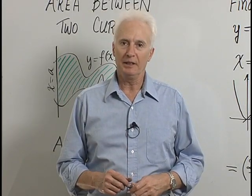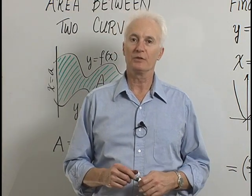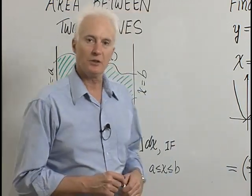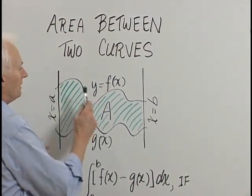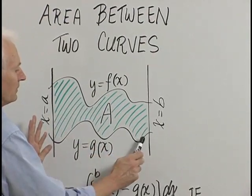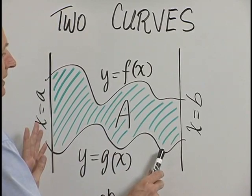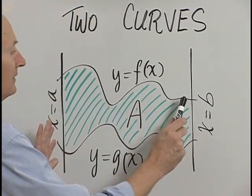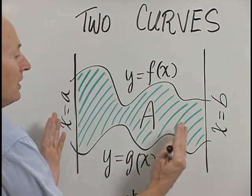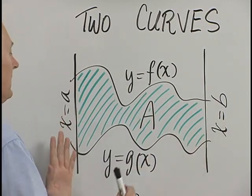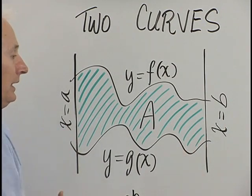Hello, I'm Dr. Maurice Dupre, and in this section we're going to discuss the area between two curves. Let's look at a picture of how we deal with finding the area between two curves. Our two curves are generally given to us as graphs of functions: y equals g of x, and y equals f of x above y equals g of x. Our horizontal extent will be specified by vertical lines x equals a and x equals b.